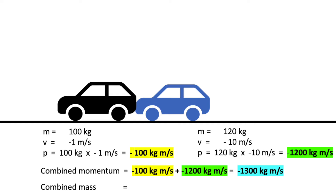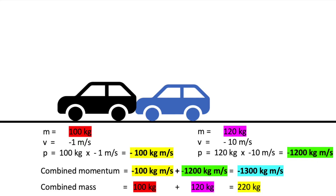Now you need to work out the combined mass of both cars after the collision. You add the mass of the black car, which is 100kg, to the mass of the blue car, which is 120kg, giving you a combined mass of 220kg.